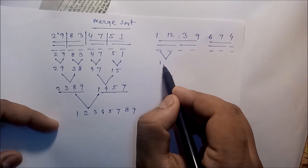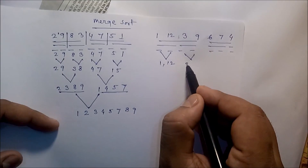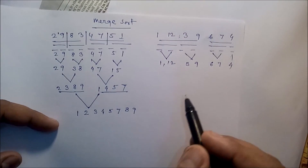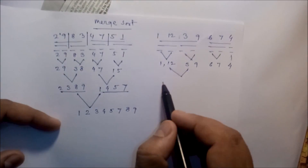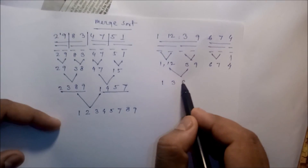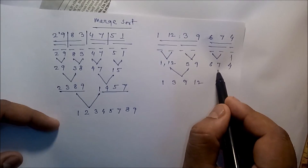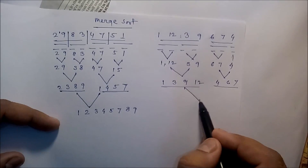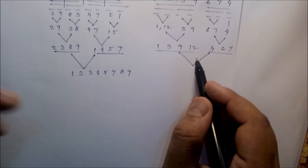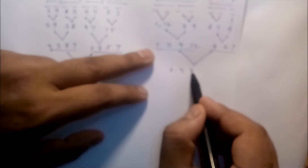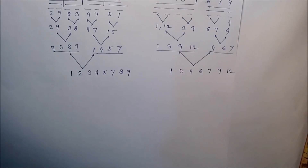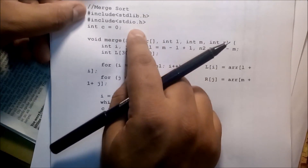First merge these two: we get 1 and 12. Then merge these two: 3 and 9. Merge these two: 6 and 7. Now merge the next level: we get 1, 3, 9, 12. Merge the other side: 4, 6, and 7. Finally merge these two datasets to get: 1, 3, 4, 6, 7, 9, 12 — the fully sorted result. Now let's look at the merge sort program.